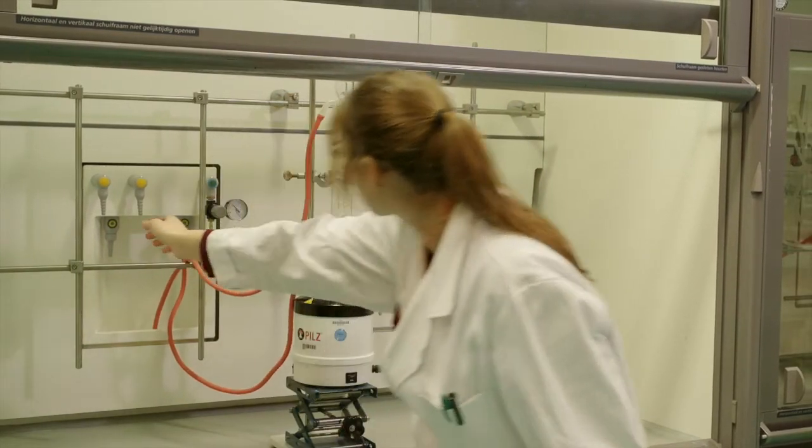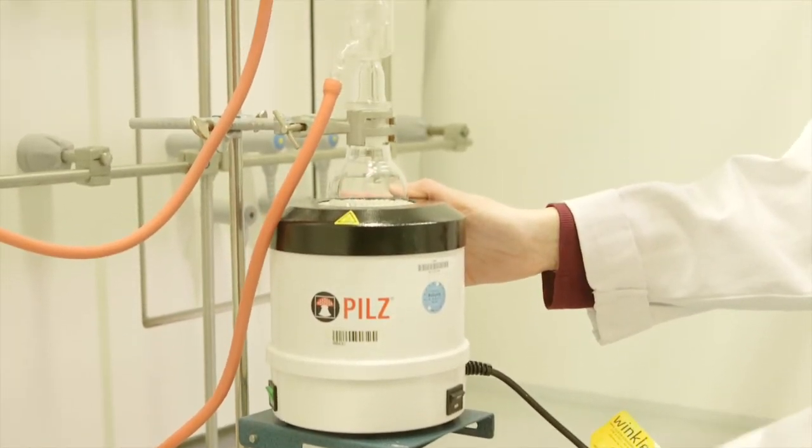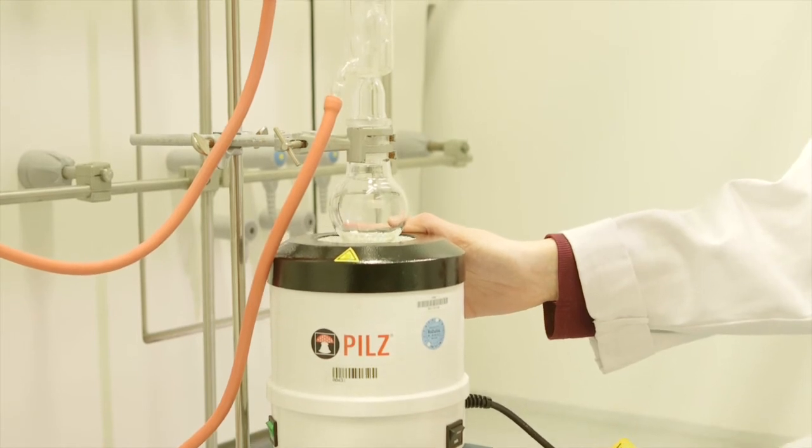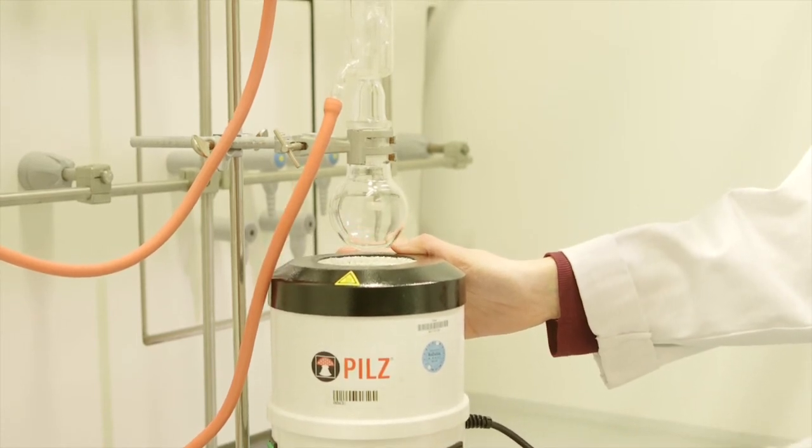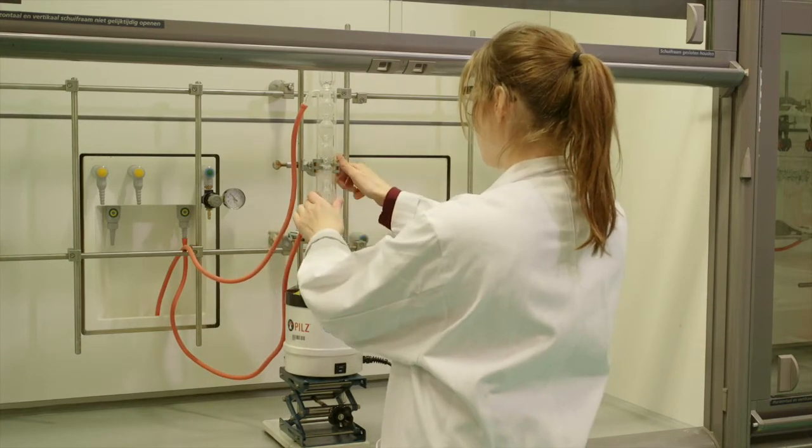Now examine the setup. When the support jack is lowered, the flask is not in contact with the heat source. This is important to remember if you want to cool the solution. In addition, make sure that your clamps are tight and that the tubing does not leak when you turn on the water.